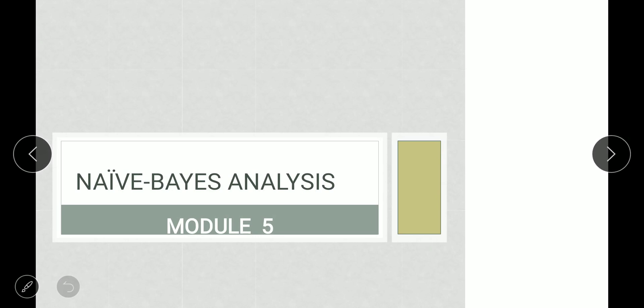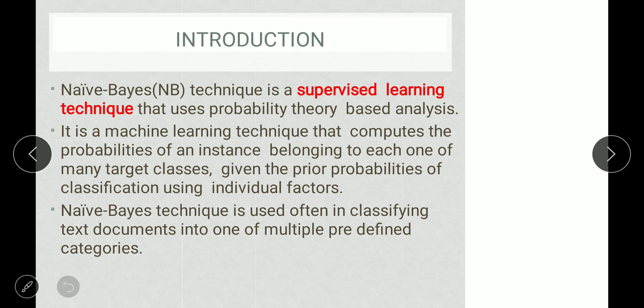In artificial intelligence subject you have also learned this. In machine learning, Naive Bayes classifiers are a family of simple probabilistic classifiers based on applying Bayes' theorem with strong independence assumptions between the features. They are among the simplest Bayesian network models but can be coupled with kernel density estimation to achieve higher accuracy levels.